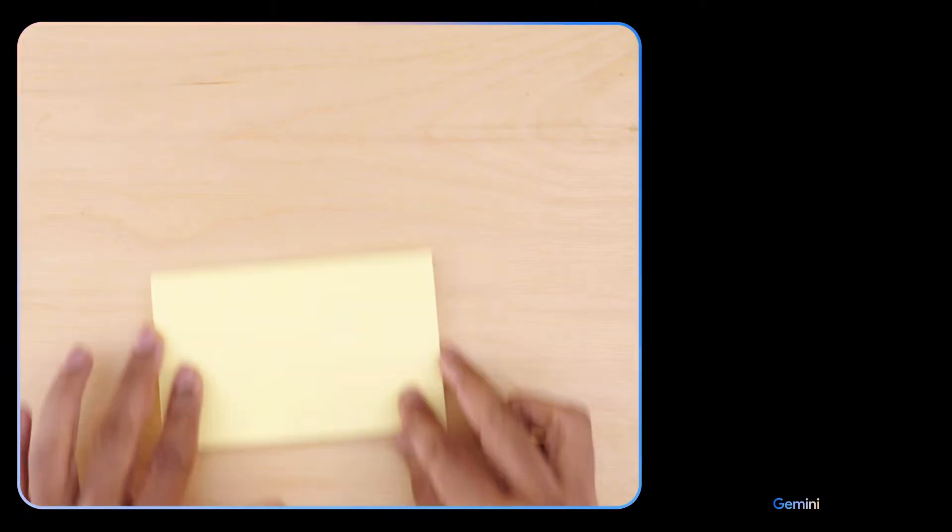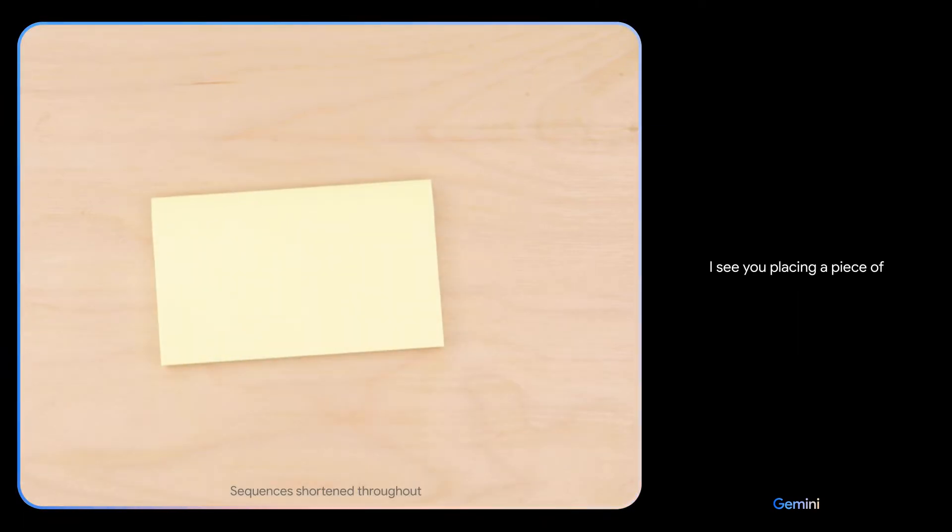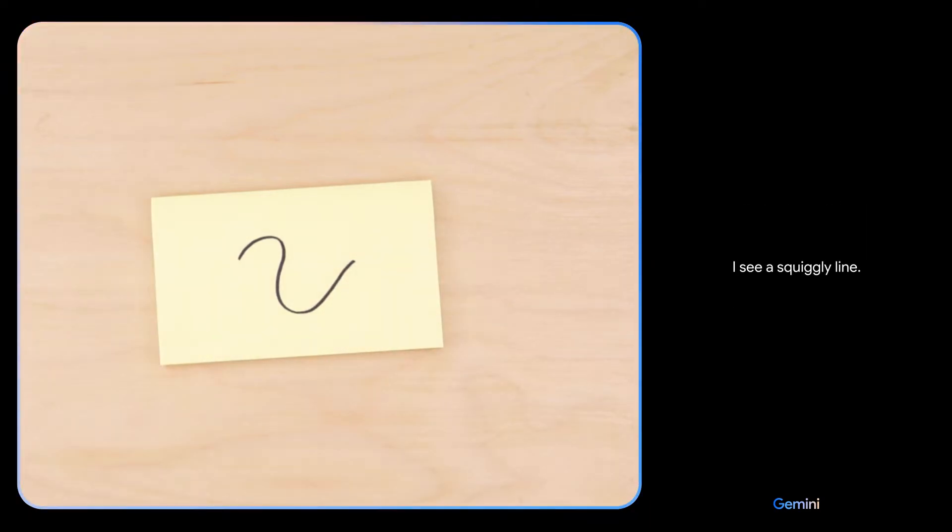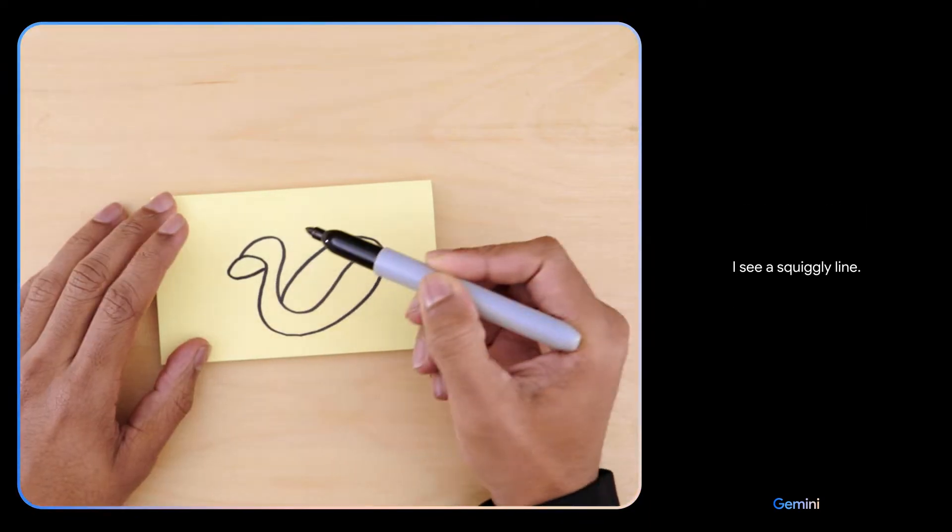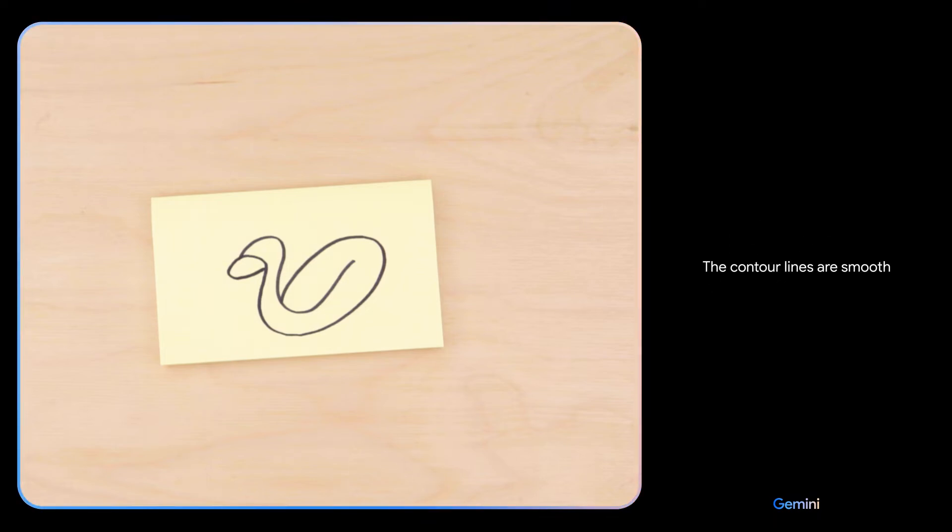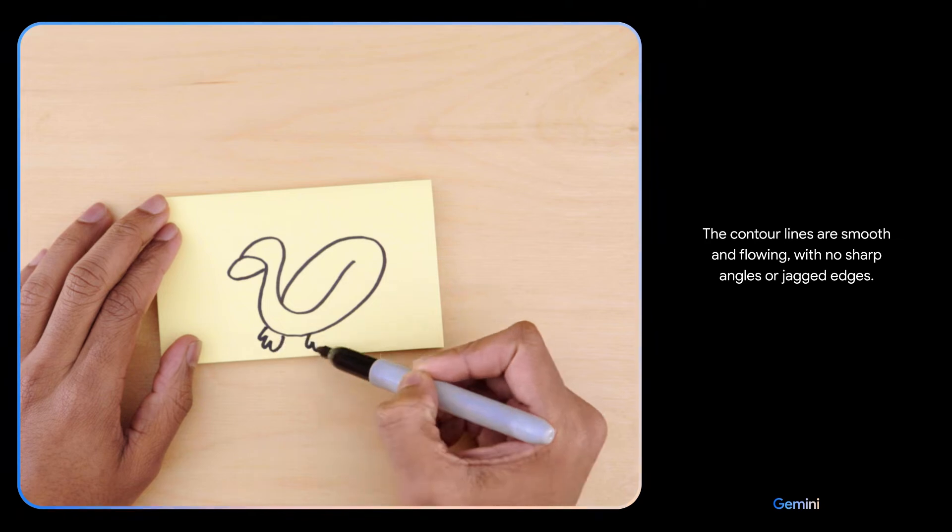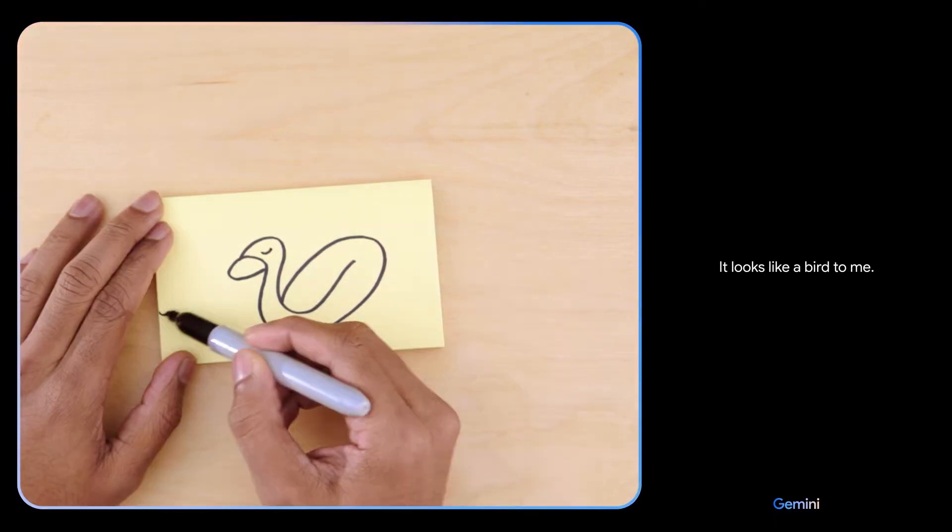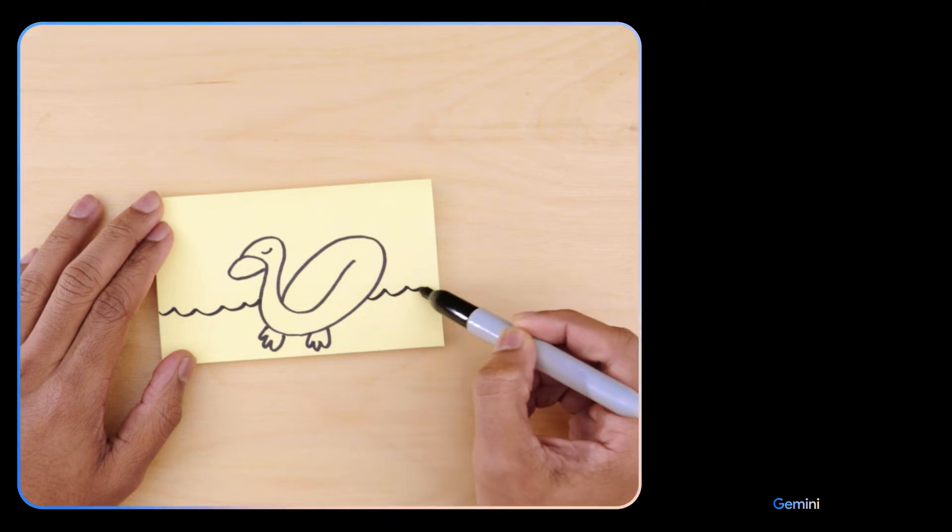All right, testing Gemini. Here we go. Tell me what you see. I see you placing a piece of paper on the table. I see a squiggly line. What about now? The contour lines are smooth and flowing with no sharp angles or jagged edges. It looks like a bird to me.